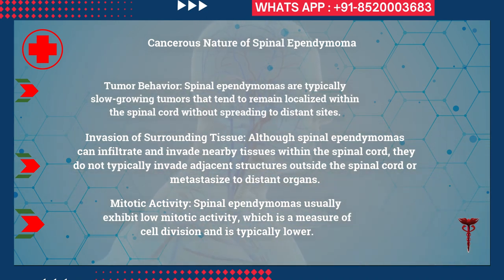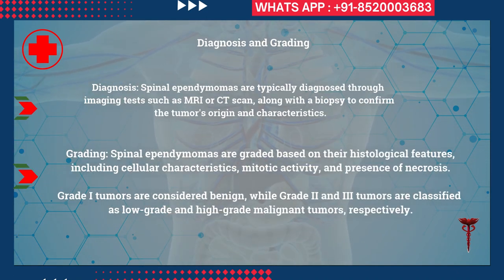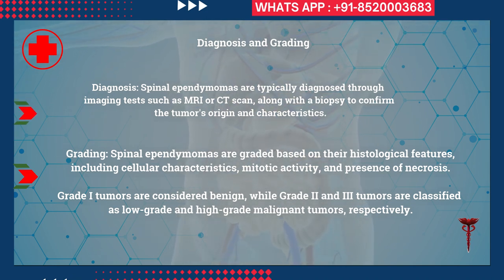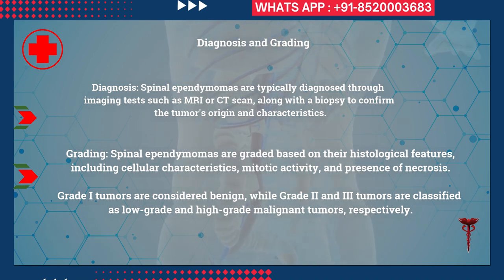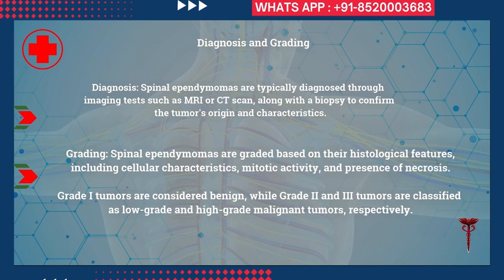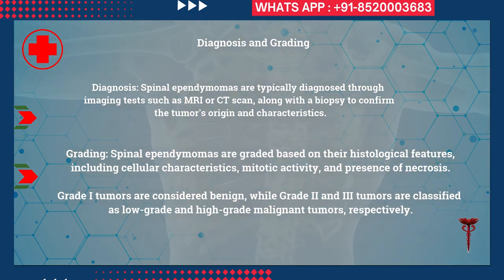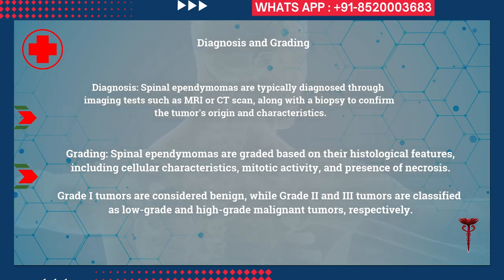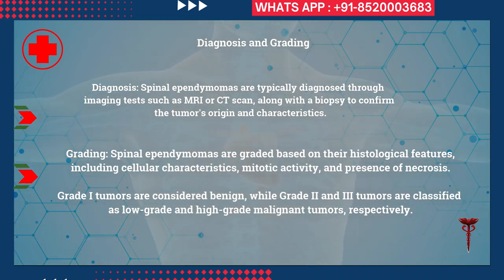Spinal ependymomas usually exhibit low mitotic activity, which is a measure of cell division. Diagnosis is typically made through imaging tests such as MRI or CT scan, along with a biopsy to confirm the tumor's origin and characteristics.